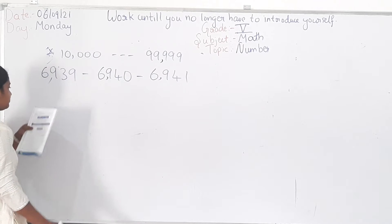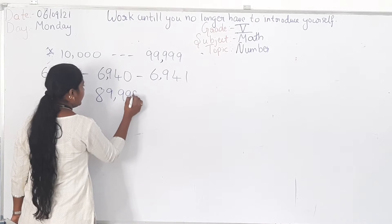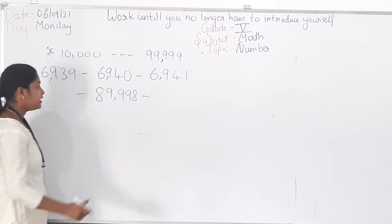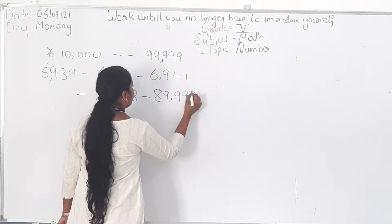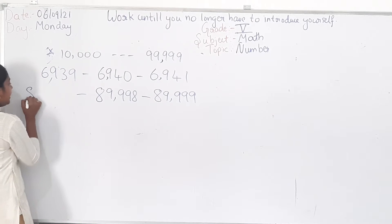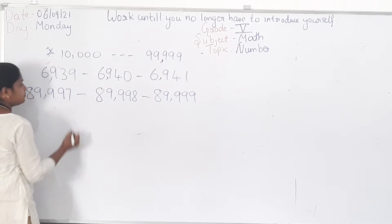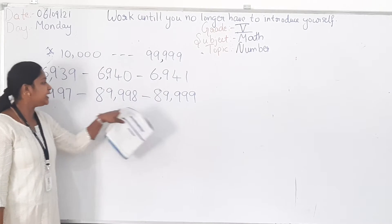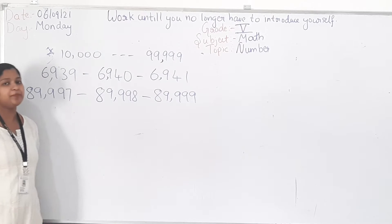Shall we see one more problem? The number is 89,998. Can you tell me the successor for this number? That is 89,999. Then what is the predecessor for this number? It is increased or decreased by 1. This is successor and predecessor.